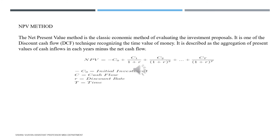The first discounted method is the net present value (NPV) method. NPV is the classic economic method of evaluating investment proposals. It is a discounted cash flow method that recognizes the time value of money, using the equation 1 / (1 + r)^n to discount each year's cash inflow. We sum the present values of all cash inflows and subtract the initial investment. We will discuss this in detail with mathematical problems in the classroom.